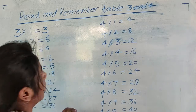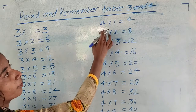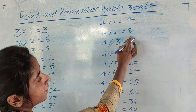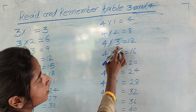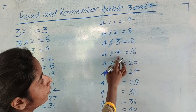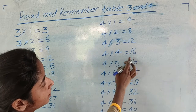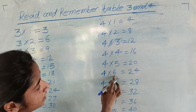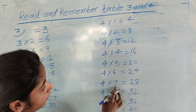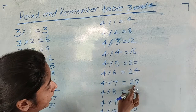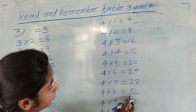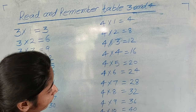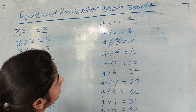आगे देखेंगे। 4 × 1 = 4, 4 × 2 = 8, 4 × 3 = 12, 4 × 4 = 16, 4 × 5 = 20, 4 × 6 = 24, 4 × 7 = 28, 4 × 8 = 32, 4 × 9 = 36, 4 × 10 = 40.